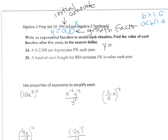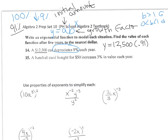Write an exponential function to model each situation and find the value after 5 years to the nearest dollar. A $12,500 car depreciates 9% each year. So y equals 12,500. If I'm depreciating, it means it's going down 9%. Everything starts at 100%, and going down 9% means it's actually 91%. So it's exponential decay. I need to write 91% as a decimal, so it's 0.91 to the x power.